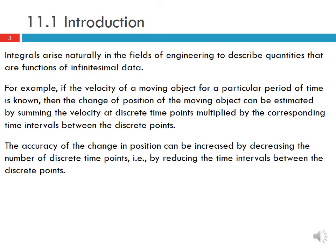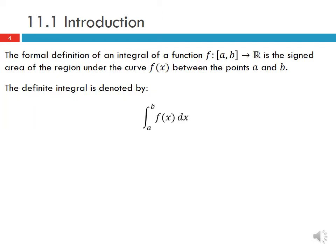The accuracy of the change in position can be increased by decreasing the number of discrete time points — that is, by reducing the time intervals between the discrete points. The formal definition of an integral of a function, where the function can be denoted f between a and b, is the signed area of the region under the curve f(x) between the points a and b. The definite integral is denoted by the integral from a to b of f(x) dx.